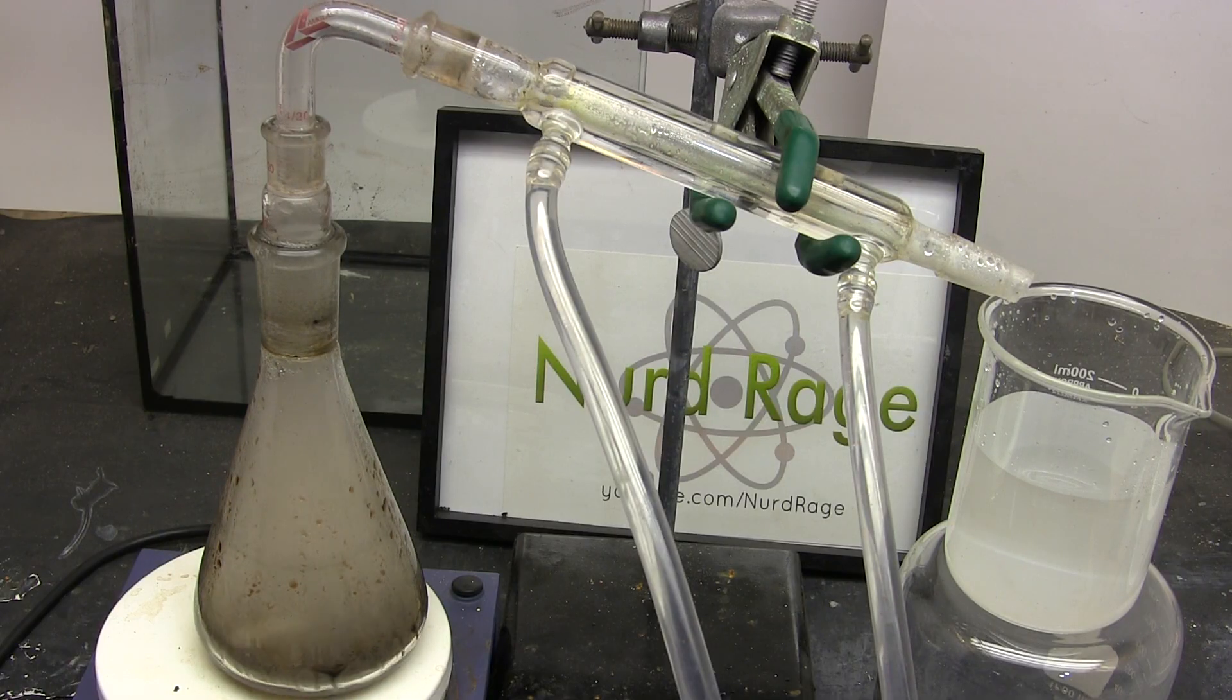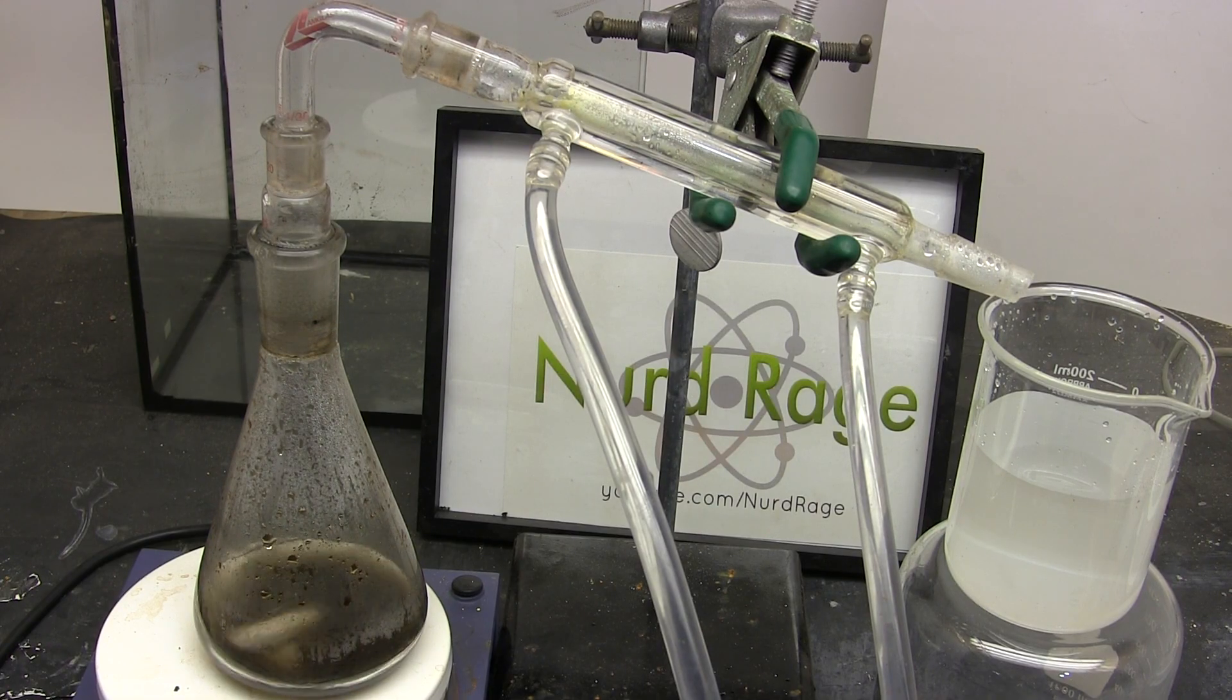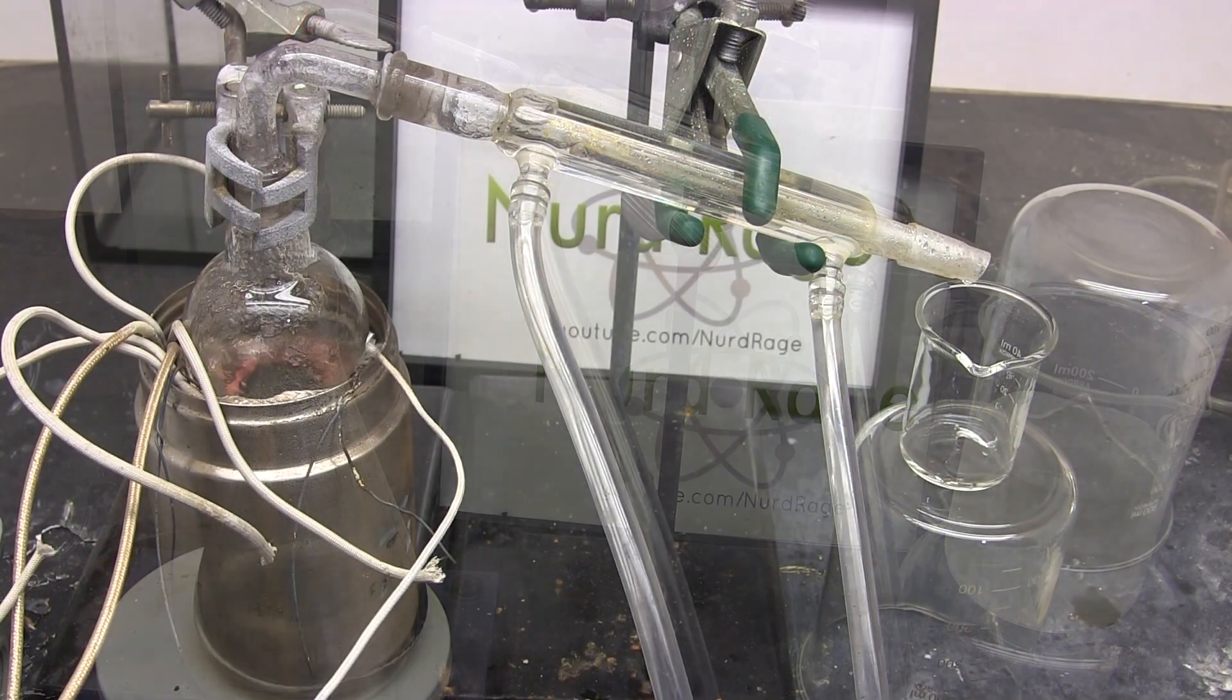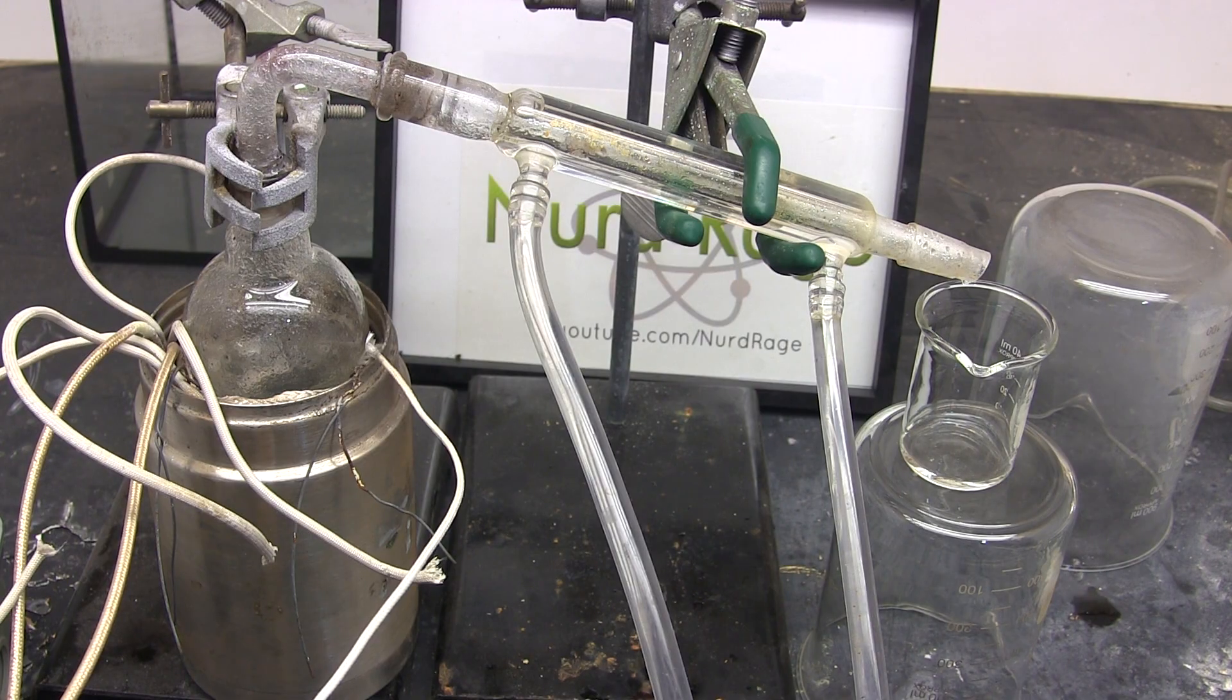Keep distilling on until you get this misting occurring in the flask. Turn off the heating and let it cool. The residue in the flask is a weak and dirty solution of sulfuric acid. To purify it we use the process involving the high temperature heating mantle I showed in an earlier video. I'll let you take a look at that one yourself so you don't waste your time here.